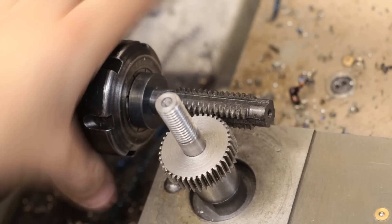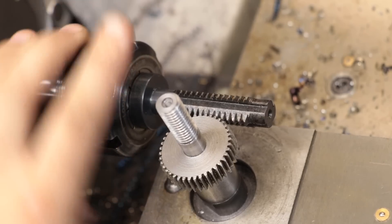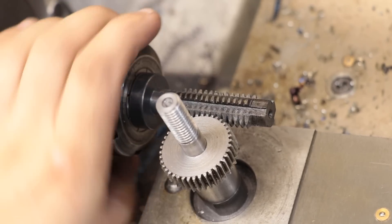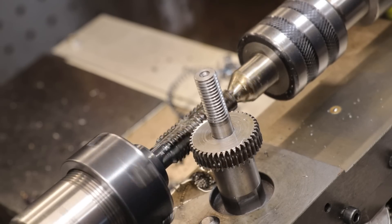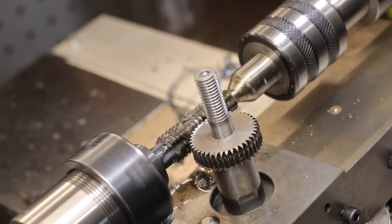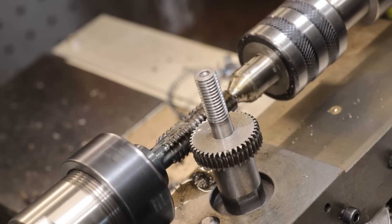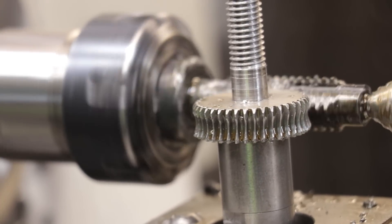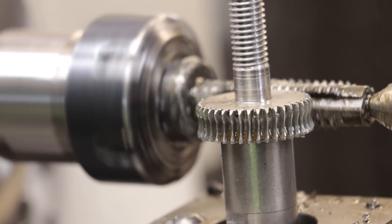Now if you remember even earlier than that, to make this whole setup I had to free hob it on the lathe using a free hobbing setup. Essentially I had to take a gear hob which kind of looks like a gear tap except a little bit bigger, and I had to feed that into a partially machined gear and rely on the hob advancing the gear to the next tooth while also cutting the current one at the same time.